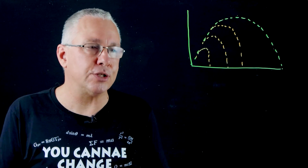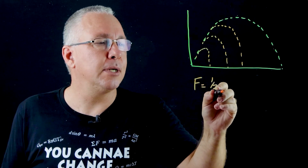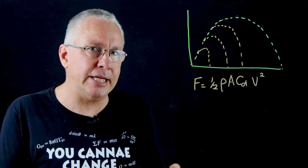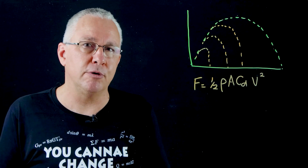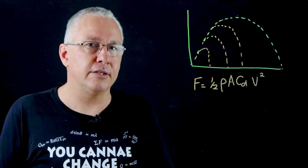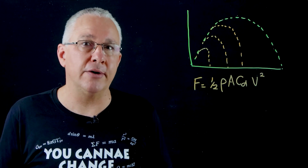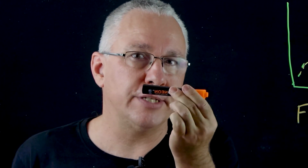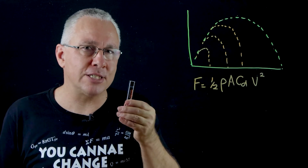We can analyze this through the drag equation: the force of drag equals one half multiplied by ρ (rho) multiplied by A multiplied by C_d multiplied by v². Rho is the density of the medium the object moves through — in our case air — so if air density changes due to temperature, drag is affected. A is the cross-sectional area: throwing a pen end-on presents a smaller cross-sectional area and therefore less drag than throwing it broadside.